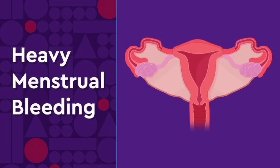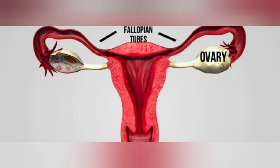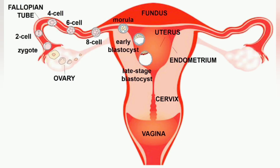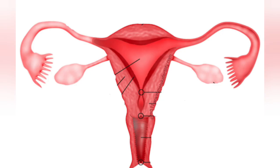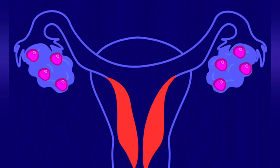In this video we will discuss about the menstruation cycle. The menstruation cycle starts from puberty and it is called menarche. In females, the menstruation cycle is repeated at an average interval of about 28 to 29 days. The menstruation cycle stops at the age of 50 years and it is called menopause.